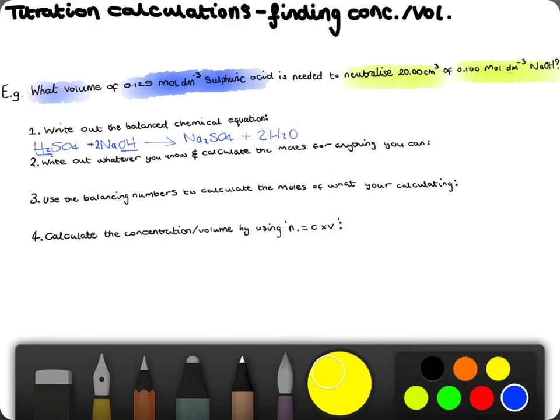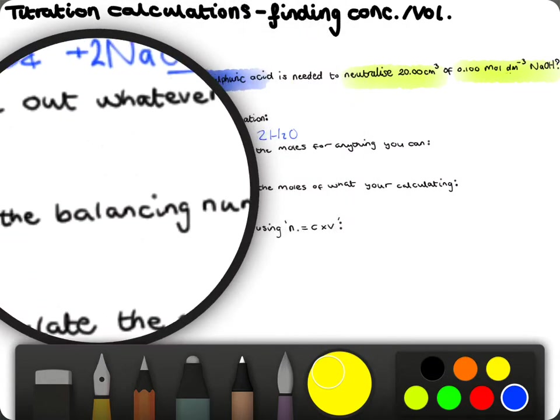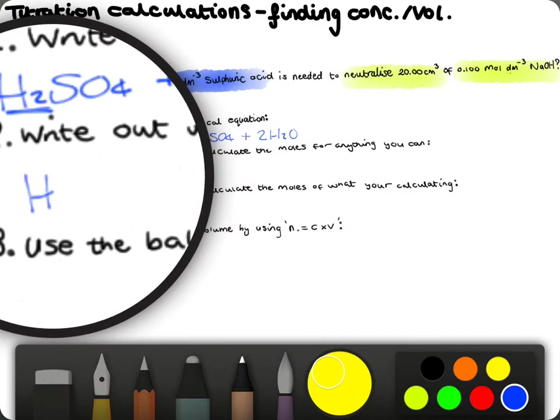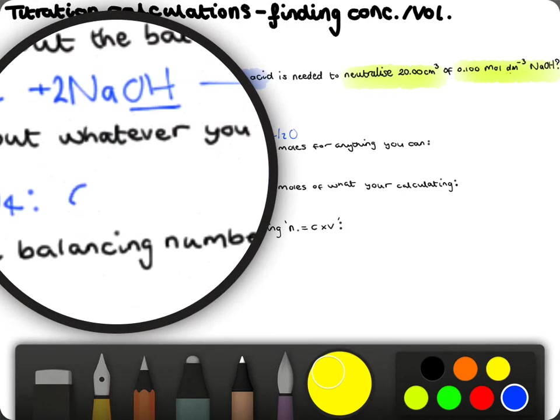So, once we've done this, we need to, again, write out whatever we know and calculate the moles for anything we can. So, for the H2SO4, we know that it's got a concentration of 0.125, but that's all we know.